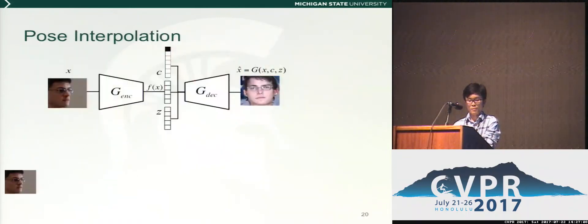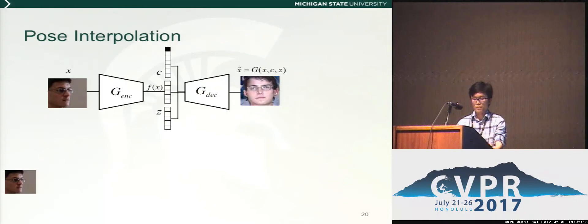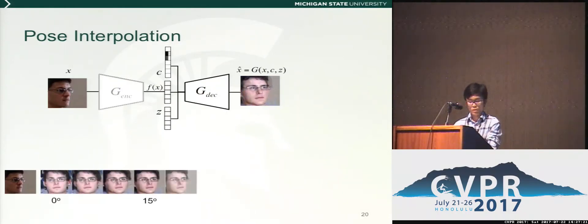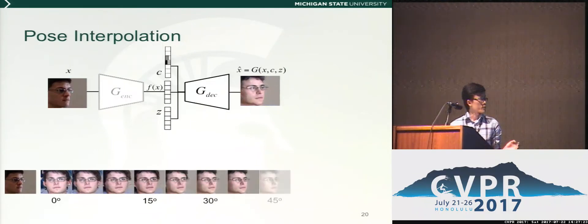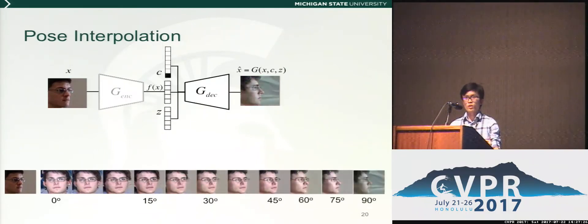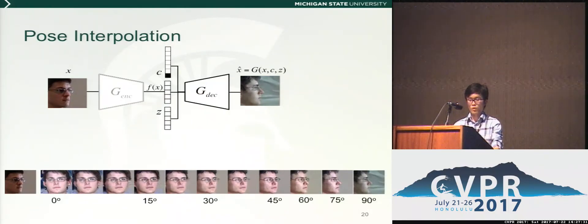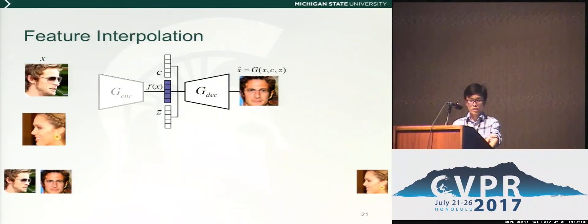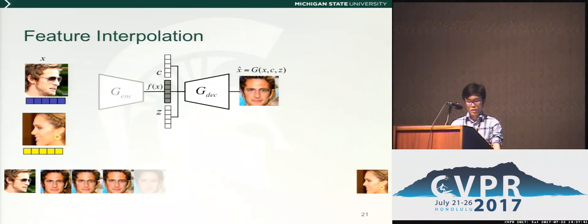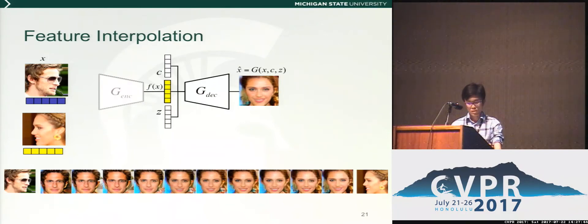Next, I will show the GAN's ability in image synthesis. The first experiment is doing interpolation in pose code vectors. During training, we only provide discrete pose codes — for example, faces at every 15 degrees. However, by interpolating between nearby pose codes, we can generate continuous and novel faces. As a second feature, given two feature vectors from two different input images, we can also interpolate between two features.